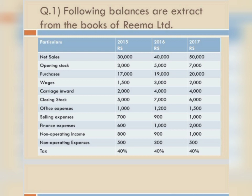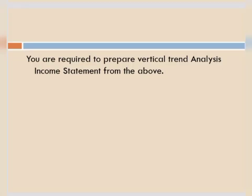Non-operating income: 800 for 2015, 900 for 2016, and 1,000 for 2017. Non-operating expenses: 500 for 2015, 300 for 2016, and 500 for 2017. Income tax is 40% for all three years — 2015, 2016, and 2017 — meaning income tax is charged at the same rate every year. You are required to prepare a vertical trend analysis income statement.